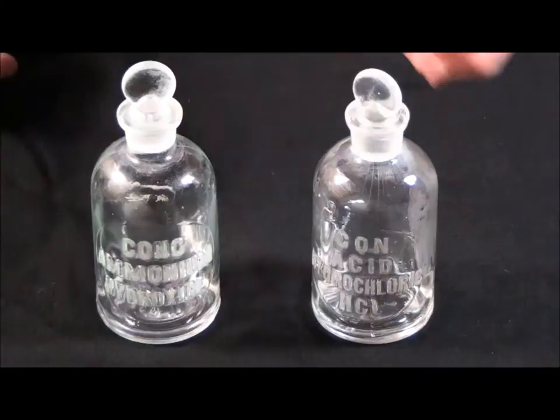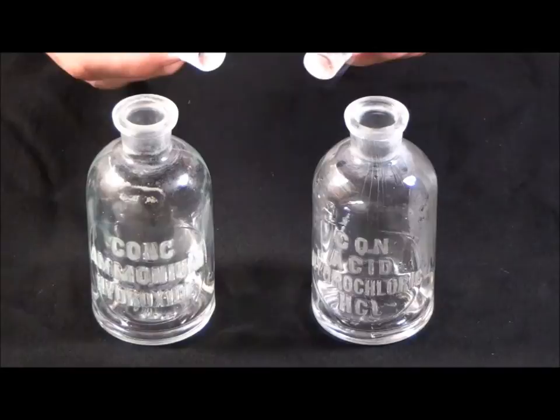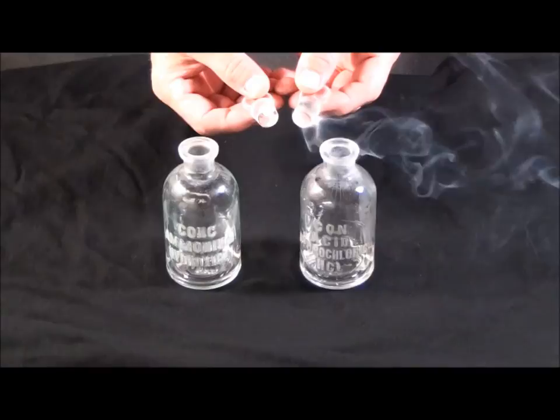Here we see what the reaction looks like. We have concentrated hydrochloric acid on the right, concentrated ammonia on the left. By simply removing the stoppers, the vapors interact, producing ammonium chloride.